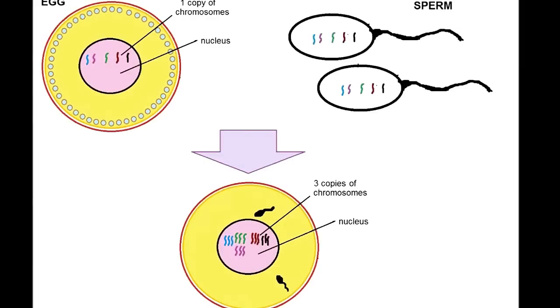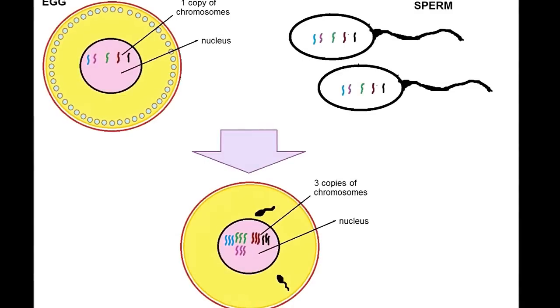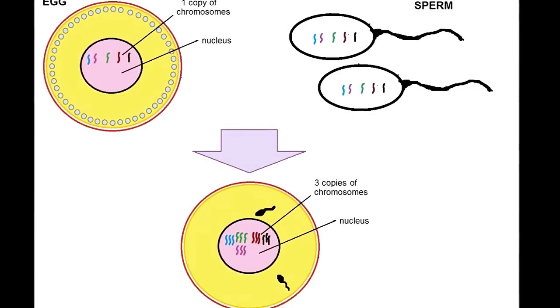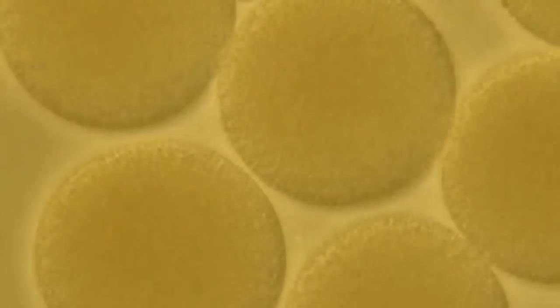If more than one sperm enters the egg, a process called polyspermy, too many chromosomes would be present in the embryo, which would lead to abnormal development and death. Let's see how the sea urchin egg can prevent this from happening.